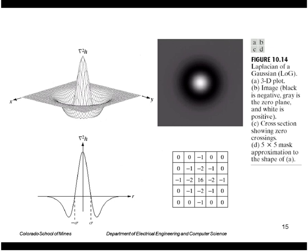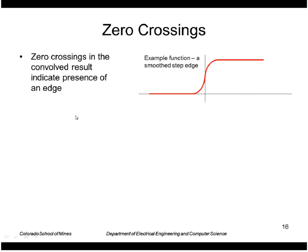This is a picture of that operator shown as a surface. Here they've actually flipped the sign so that the innermost part is positive and the outer part are negative.